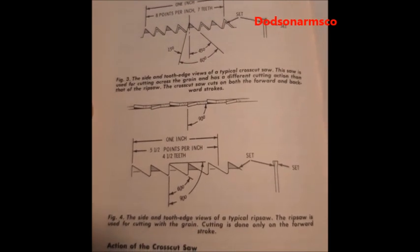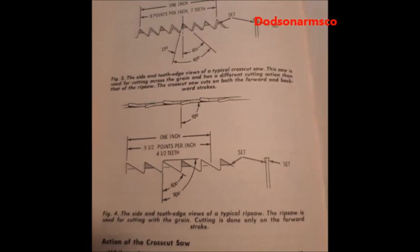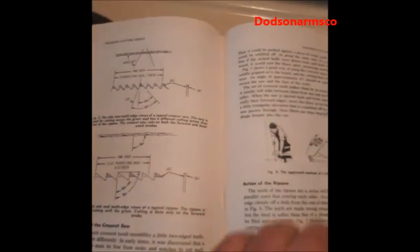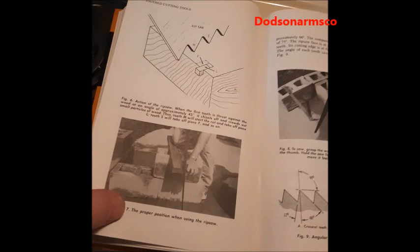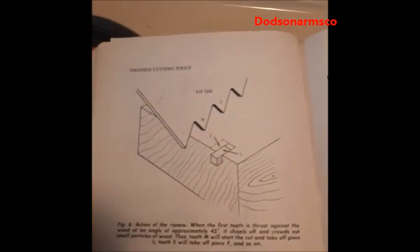The rip saw cuts on a single stroke. Most of them are set up so they only cut on the forward stroke of the saw. This book goes through a lot of detail on how to use hand saws and it concentrates a lot on rip sawing, which you don't see anymore.